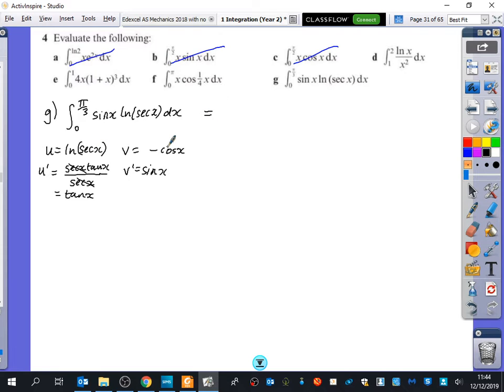So we're going to do uv. So we get minus ln sec x multiplied by cos x. I have to make sure that this is bracketed because it's the ln of sec x all being multiplied by cos x. Probably I should have written cos x at the beginning, but it's too late. 0 π over 3.